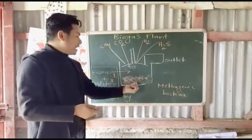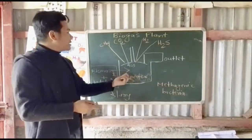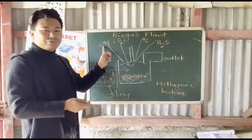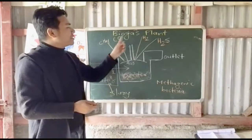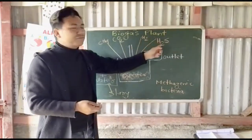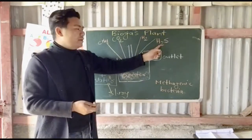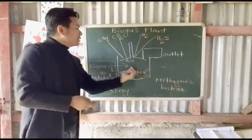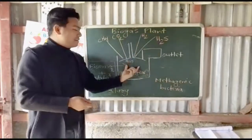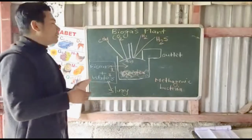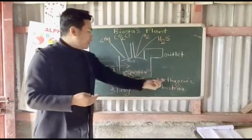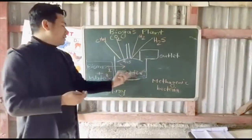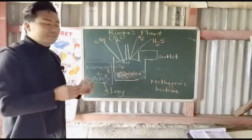As the biomass breaks down, a lot of gases are produced. The gas mixture consists mostly of 75% methane, along with carbon dioxide, hydrogen, and hydrogen sulfide (H2S), which has a slightly rotten smell. Microorganisms like methanogenic bacteria break down the biomass into this gas mixture.